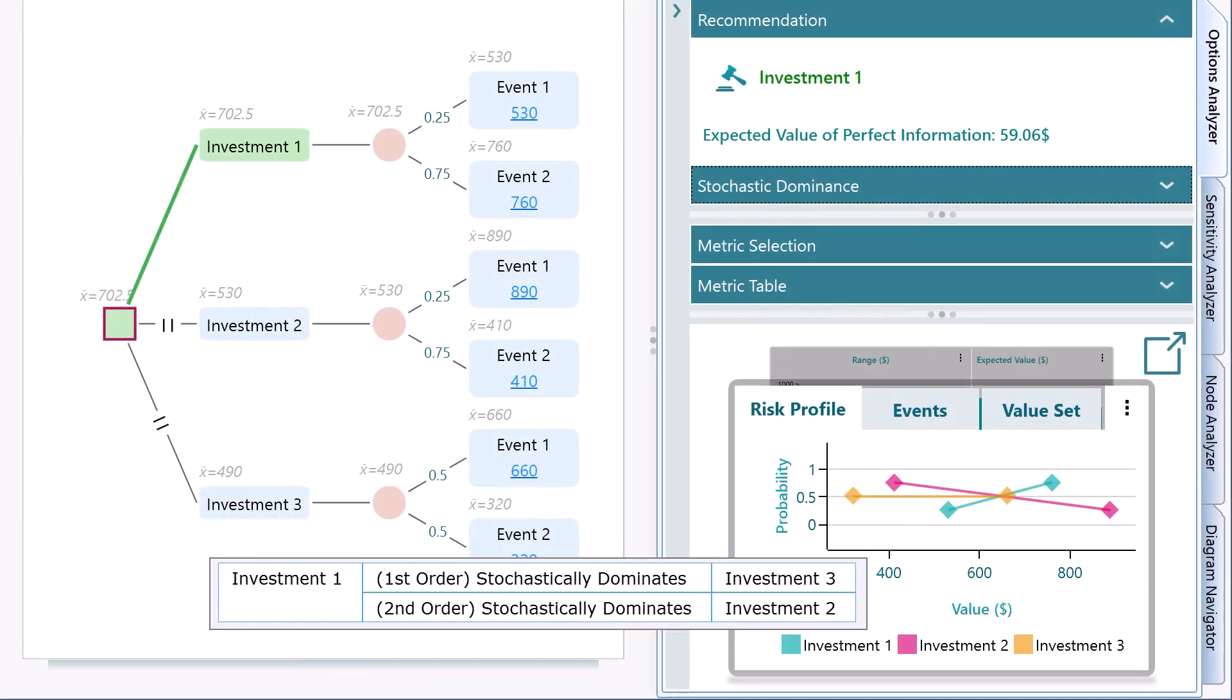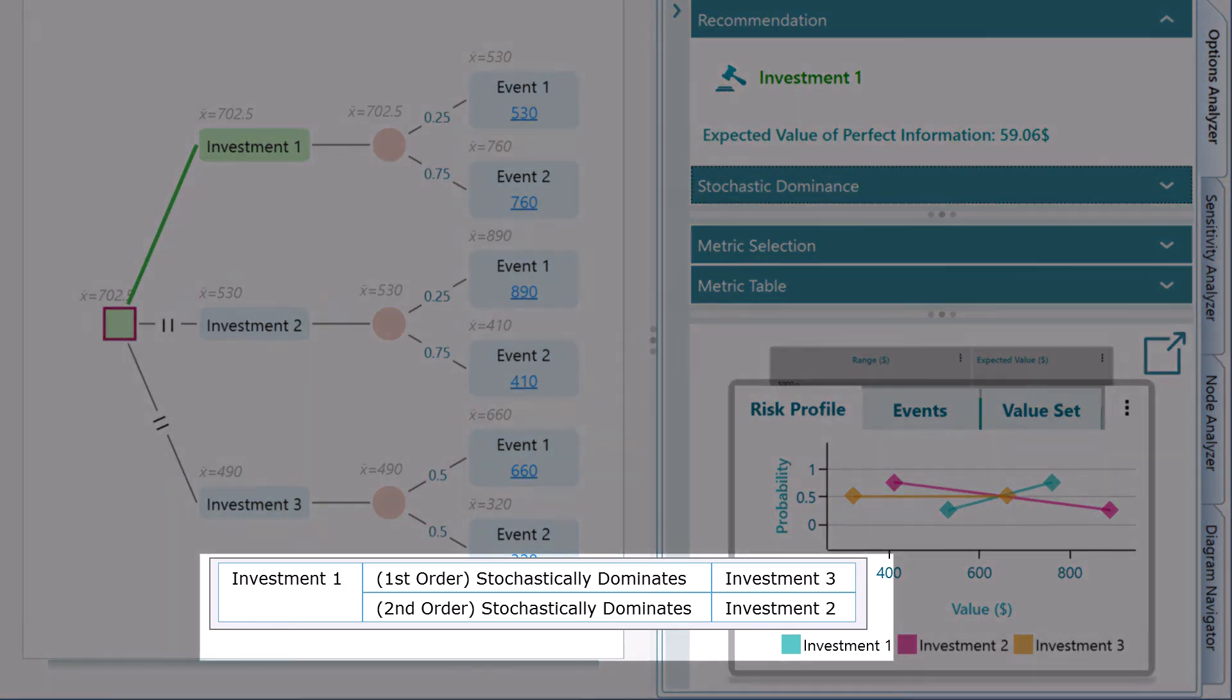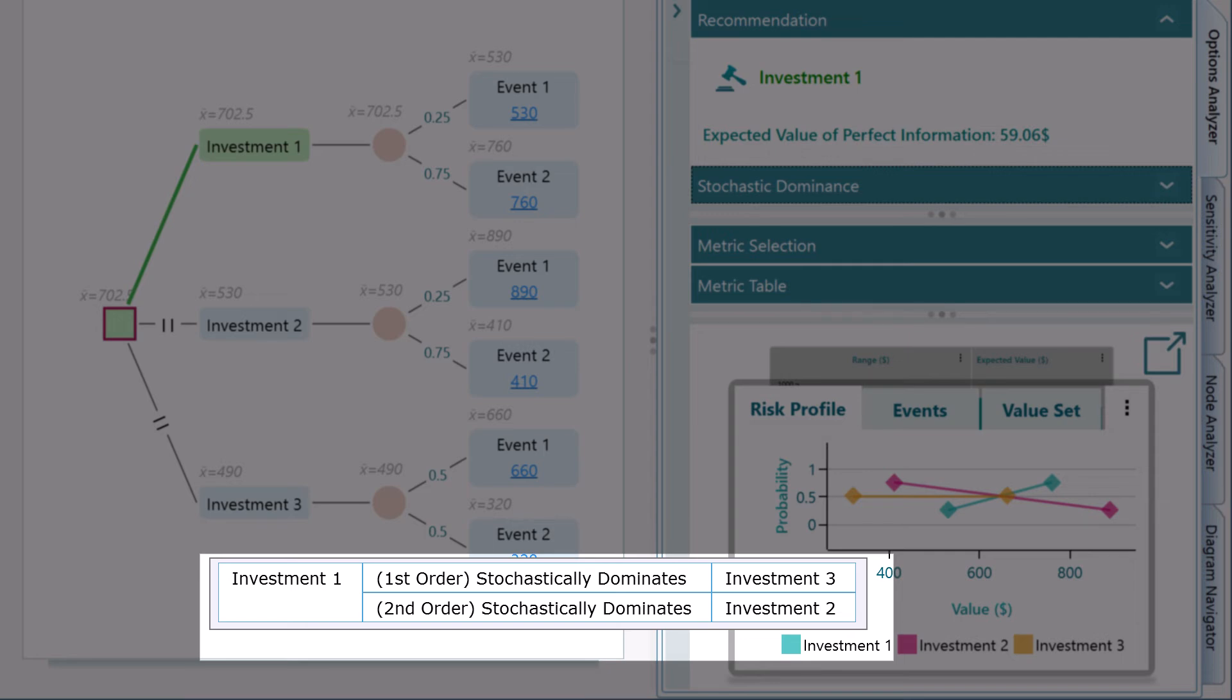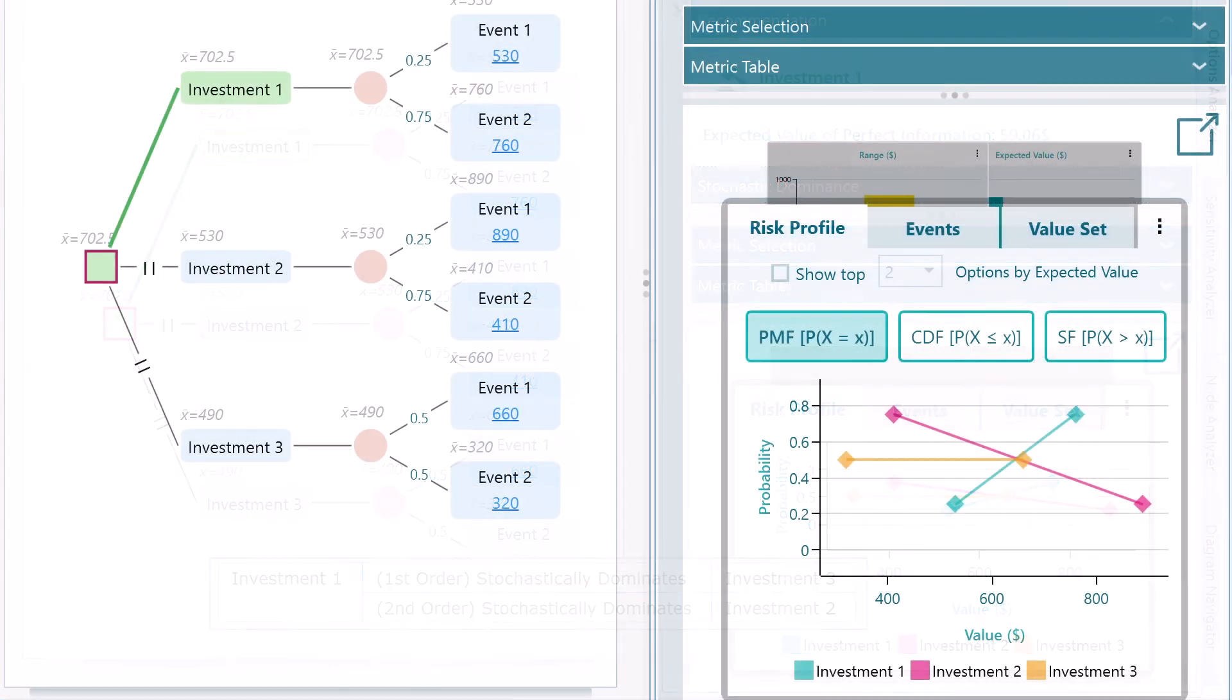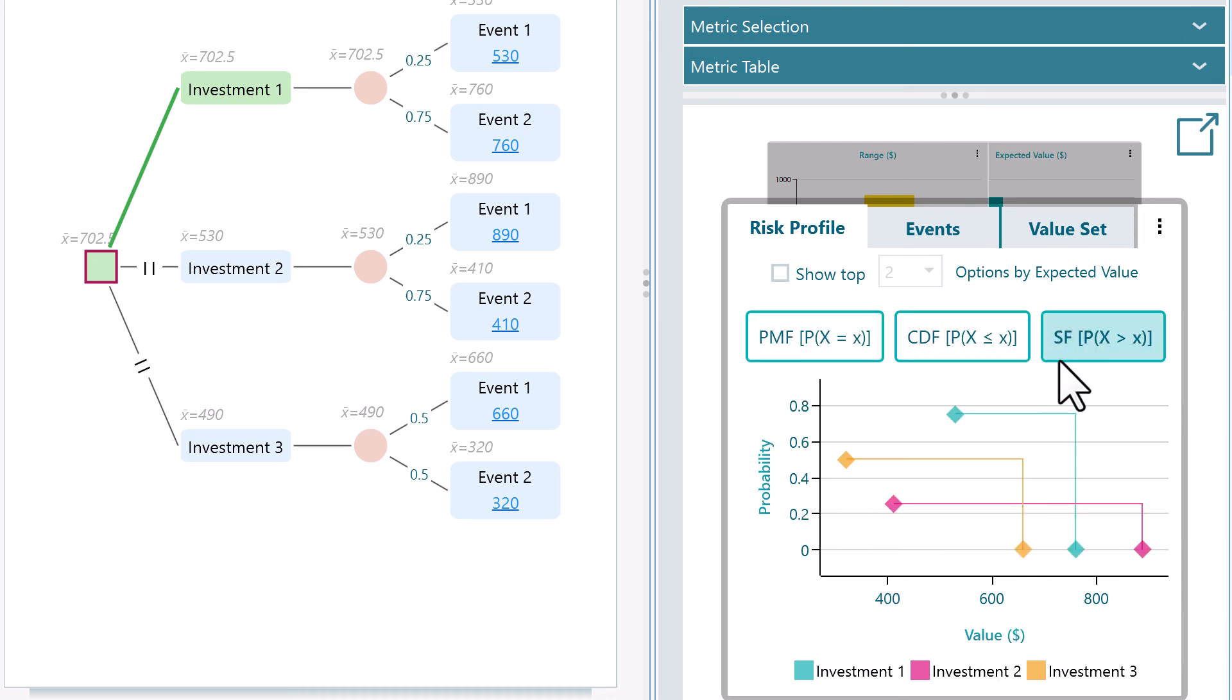Once the stochastic dominance is calculated, in addition to the stochastic dominance panel, the tooltip on the action name in the risk profile chart displays the stochastic dominance information as well. You can quickly get a sense of stochastic dominance by viewing the cumulative distribution chart and the survival function chart of the risk profile.